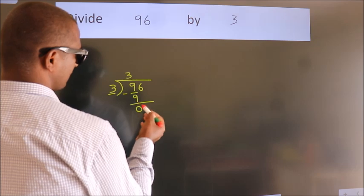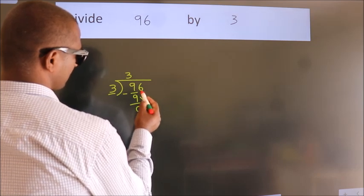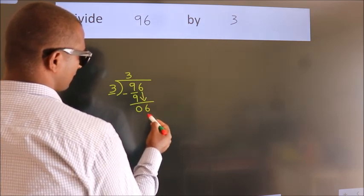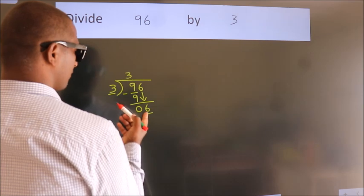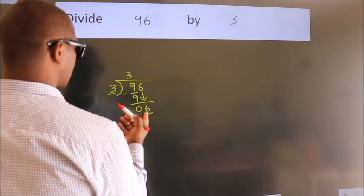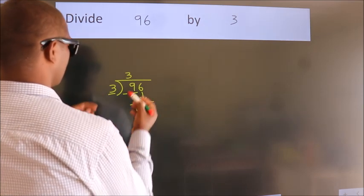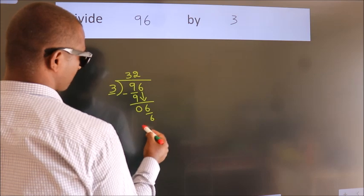After this, bring down the beside number. So 6 down. When do we get 6? In 3 table: 3 twos, 6.